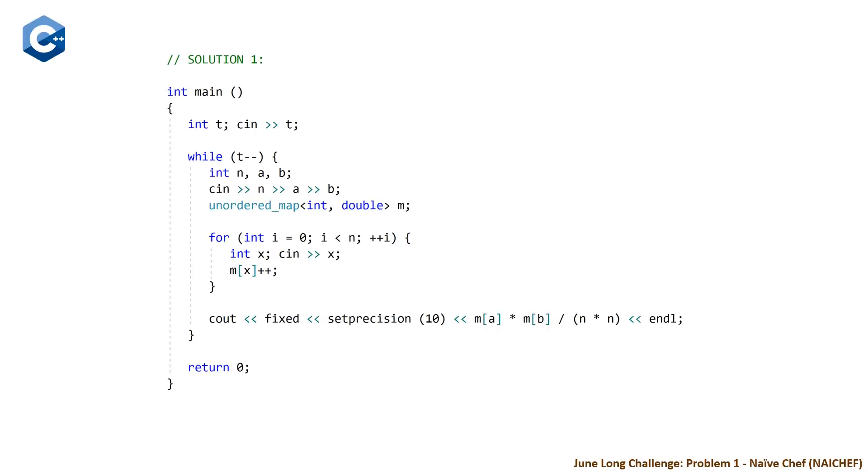So our first solution, solution 1, is gonna use a hash map. So the first three lines of code or four lines of code are gonna be the same for each solution. You're just reading in the number of test cases t, you have a while loop while t is not equal to 0 and we declare our int n, a and b and we read these in. And then we declare a hash map so we're gonna have the key as an int which is the value of the face and then a double for the number of times that this face value occurs and we're keeping it as a double so that we can have a floating point number for our results when we do this equation down here.